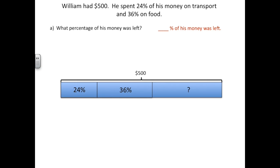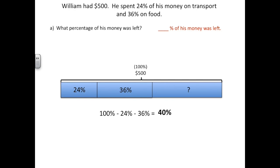Now before we can continue solving, we need to remember one important thing: $500 is the whole amount, but $500 represents 100% of William's money. So the percentages on our bar will add up to 100%. To find our question mark, we will take our whole percentage, which is 100%, and subtract our 24% and 36%. 100 minus 24 minus 36 equals 40%. So 40% of his money was left. We can get rid of our question mark and add in 40% for the remainder.